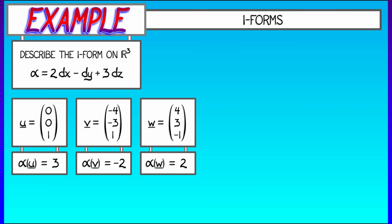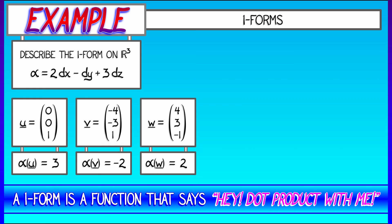Now, if you're paying attention, you are probably thinking to yourself, hey, this is just like taking a dot product with some vector. Alpha is encoding taking a dot product in this case with the vector 2i - j + 3k.